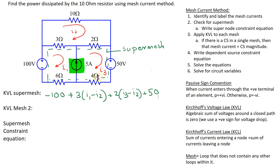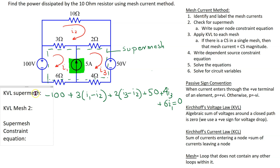Then we have the 4-ohm resistor; the current through it is only i3, so this term is plus 4i3. The last component is the 6-ohm resistor through which the only current is i1, so we add plus 6i1, and set the sum equal to zero. This completes the process of applying Kirchhoff's voltage law to the super mesh.